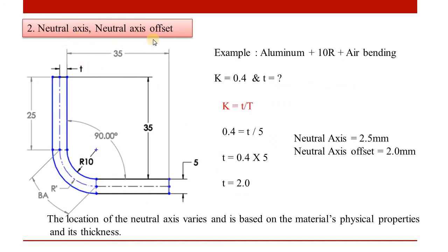Next is the neutral axis and the neutral axis offset. The neutral axis is at the exact center, which we can calculate as thickness divided by 2. The neutral axis offset, however, varies depending on the material's physical properties, thickness, radius, and bending method — so it is not always the exact center.